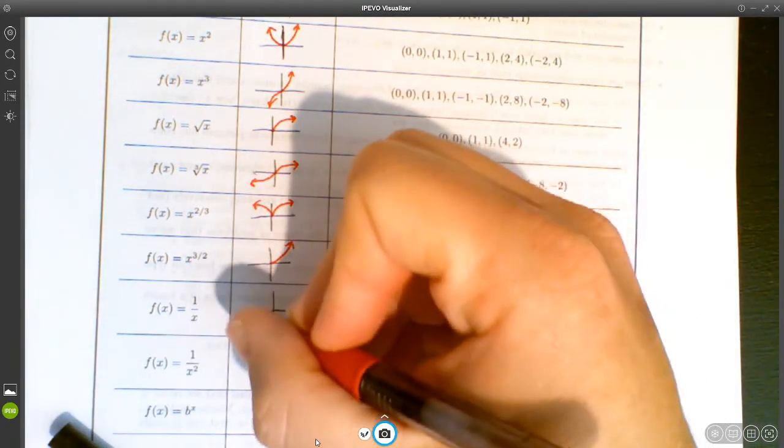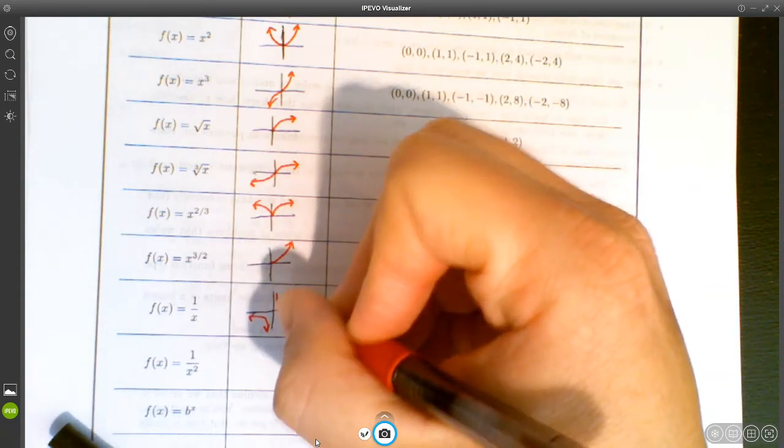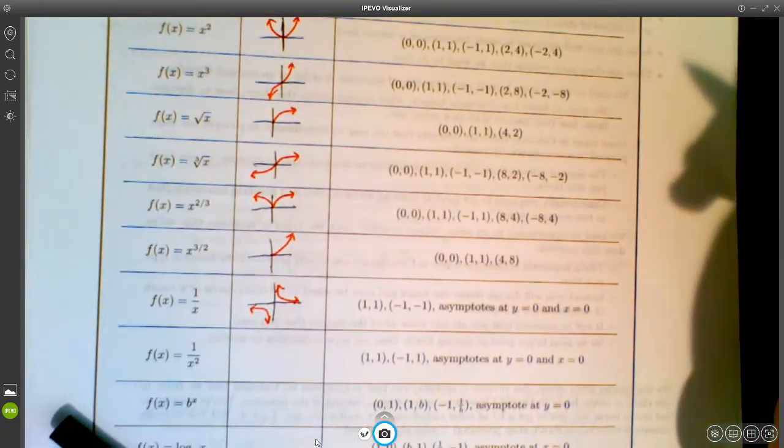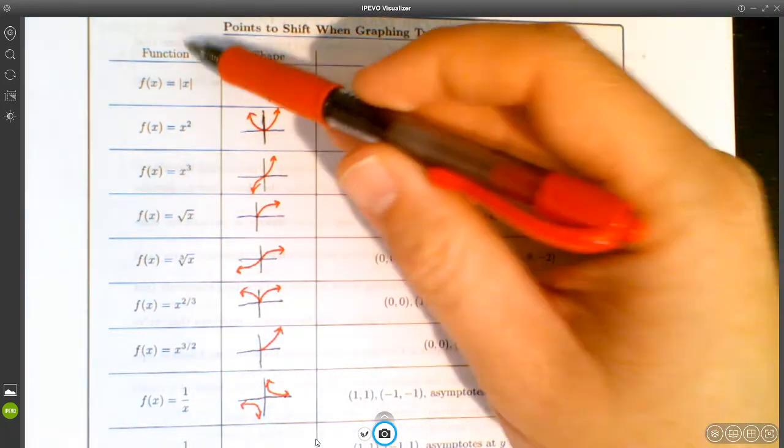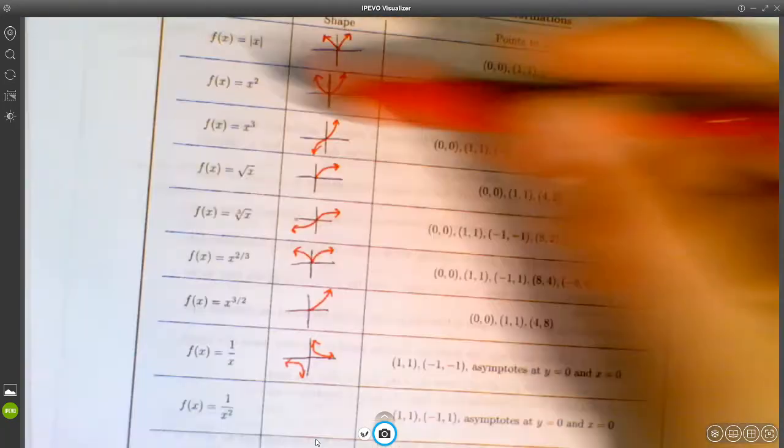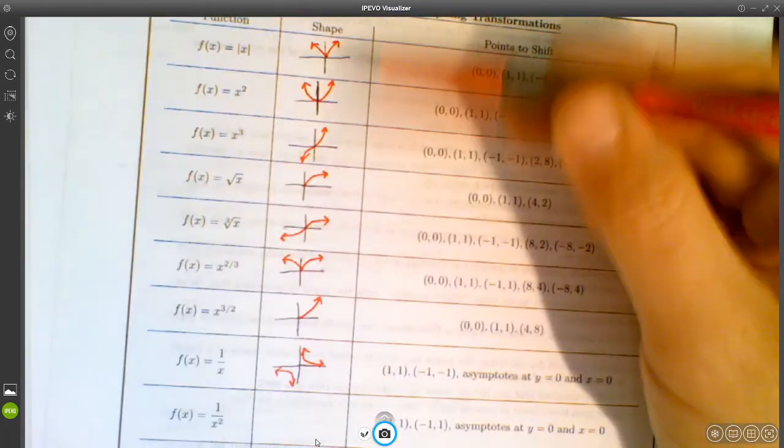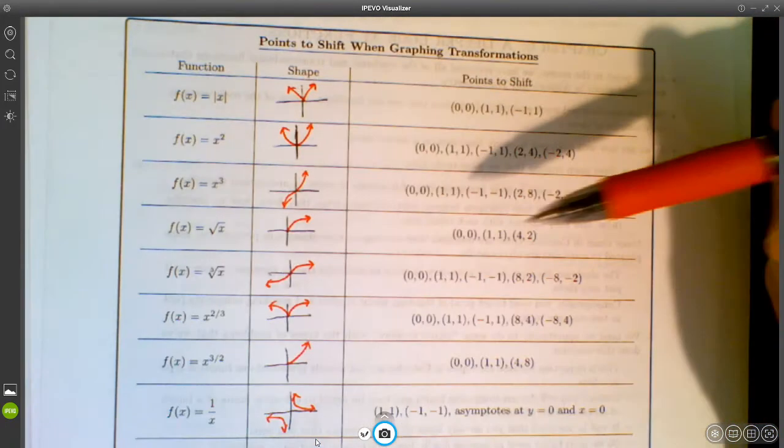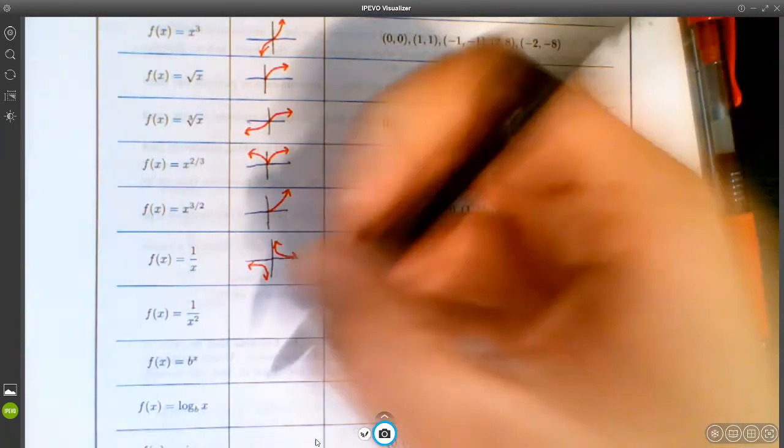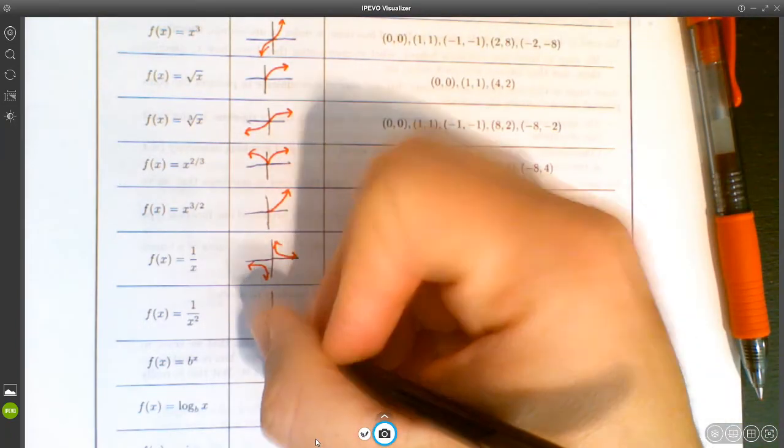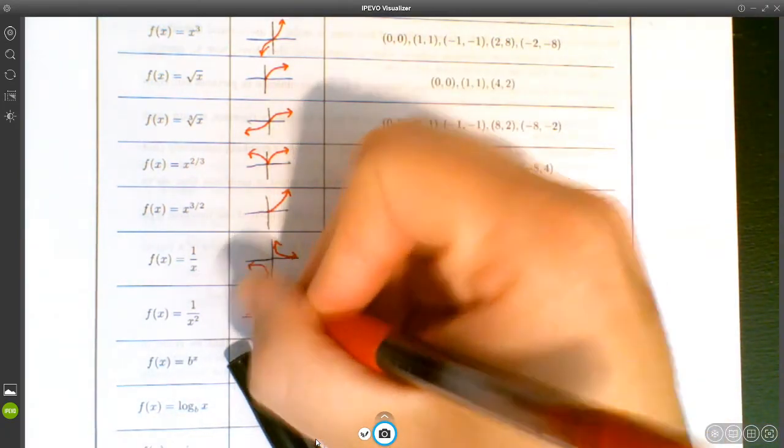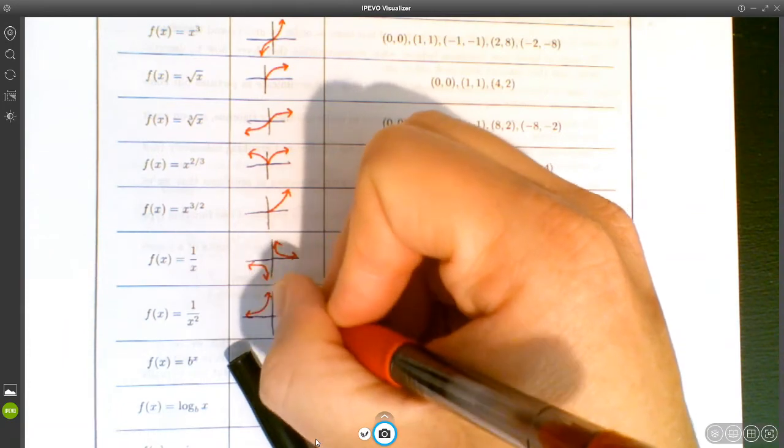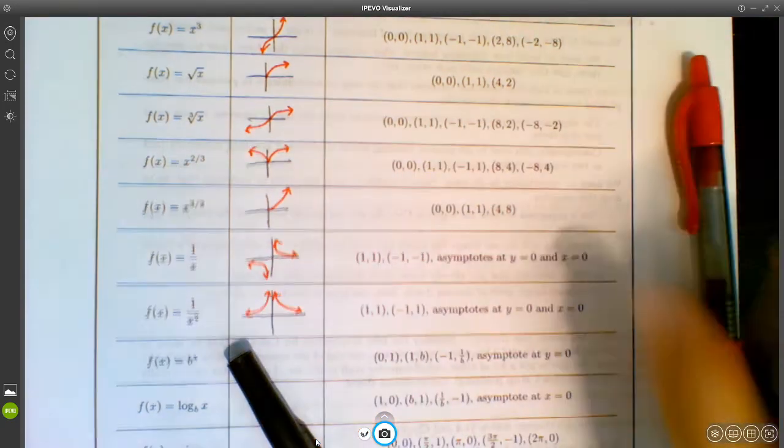1 over x looks like this. By the way, this would be really good practice for you to just go through and fill this in. In fact, you could make a chart like this in Excel or something. Put the function, the shape, and the points to shift. Fill in all the functions, but then leave these two things blank and see if you can fill them all in by memory. That would be a really good thing for you to practice to make sure that you've got all of these functions memorized. It should be like breathing. You should see these functions and know exactly what they look like.